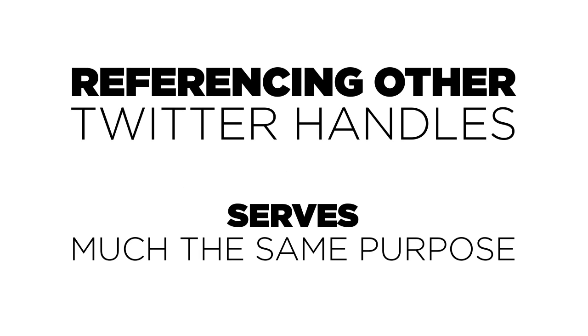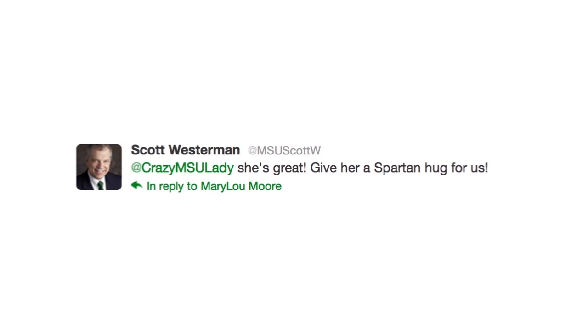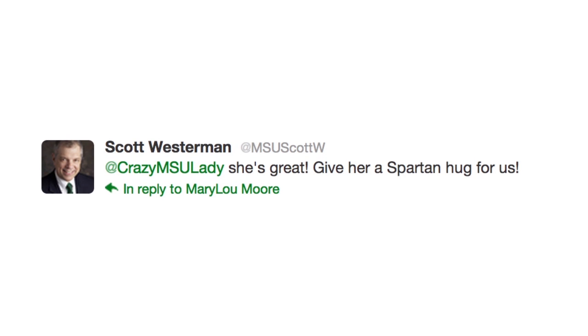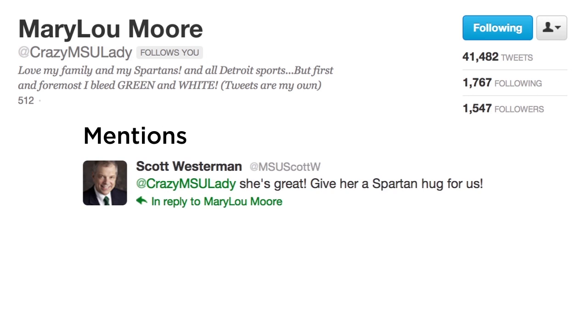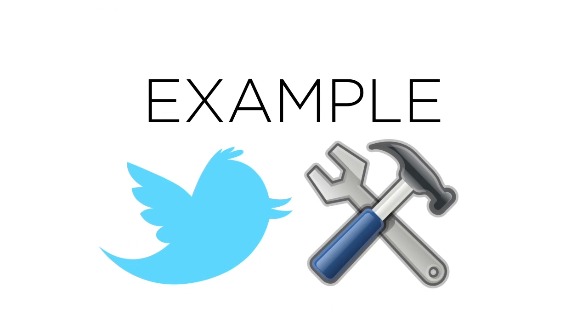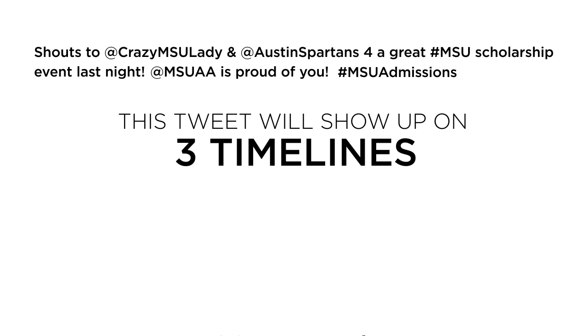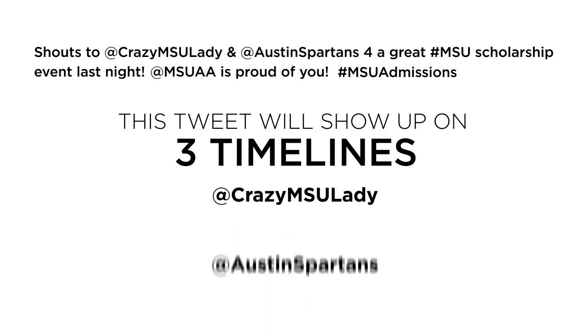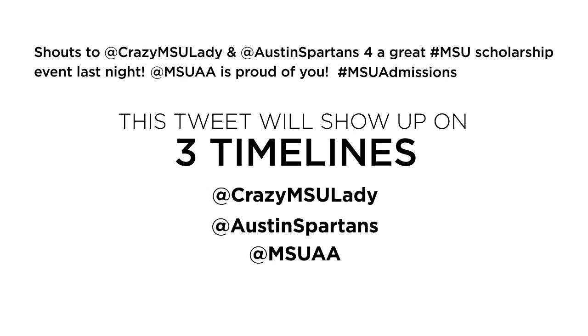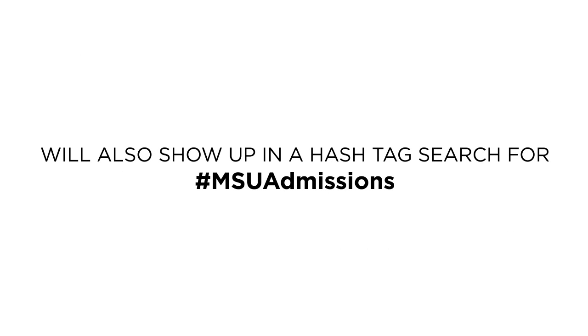Referencing other Twitter handles serves much the same purpose, and it has an additional plus. When you include @crazyMSUlady in a tweet about Mary Lou Moore, the tweet will show up in her mentions tweet stream, too. Here's an example of a tweet that incorporates many of the Twitter tools: 'Shouts to @crazyMSUlady and @AustinSpartans for a great MSU scholarship event last night. MSUAA is proud of you. #MSUadmissions.' This tweet will show up on three timelines — Crazy MSU Lady's, the Austin Spartans', and MSUAA's — and in a hashtag search for MSU admissions.